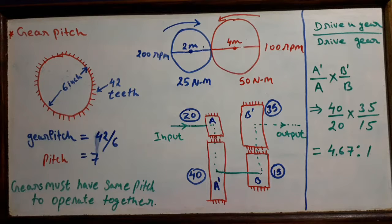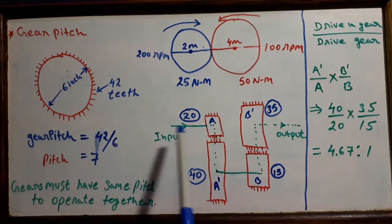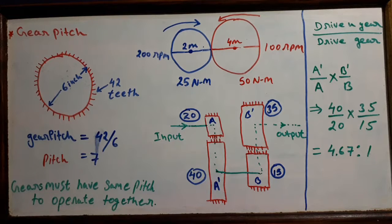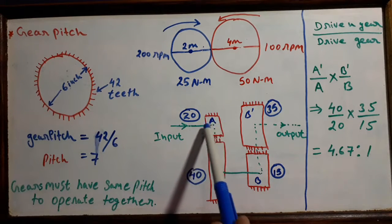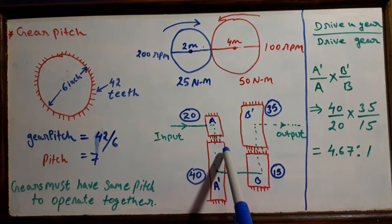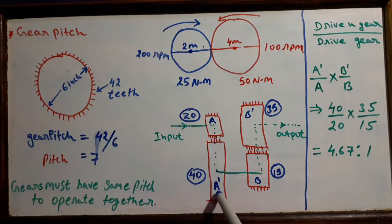Now let's calculate the gear ratio of a transmission system. We have input gear A, and the output driven gear is A dash. After that, A dash and B are rotating at the same speed because they are on the same shaft and rotating on the same speed.